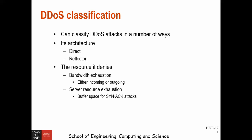The first classification is based on its architecture, which is direct or reflected. The second classification is based on the resources it denies, like bandwidth exhaustion and server resources such as websites and different application servers.